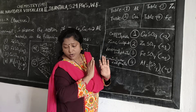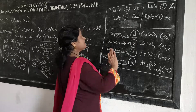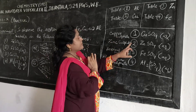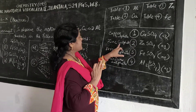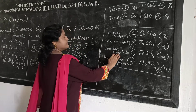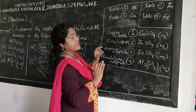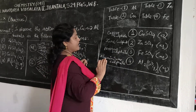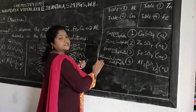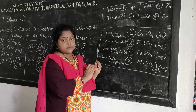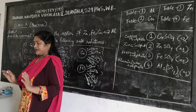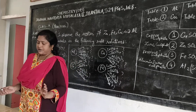Beaker 1 for all the tables is copper sulfate. Beaker 2 for all the tables is zinc sulfate. Beaker 3 for all the tables is iron sulfate. And beaker 4, last but not the least, is aluminium sulfate. So, we are here with the experiment.